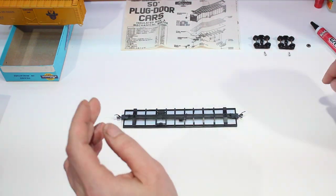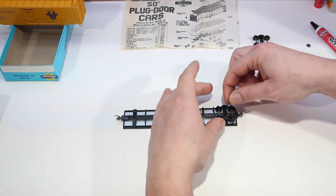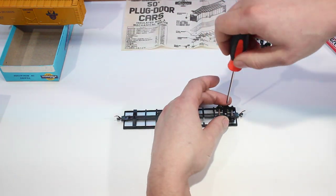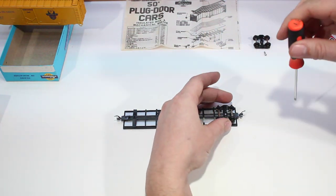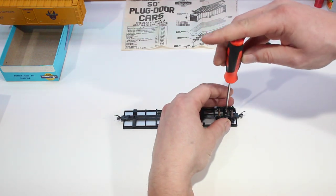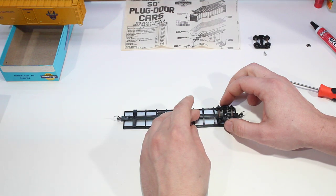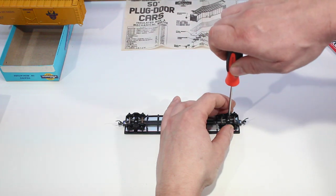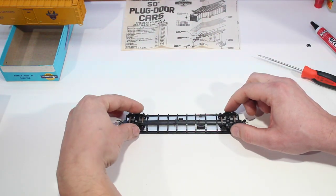Then we can go ahead and put our wheel sets on. When you got it screwed down, you want to make sure that there is still enough movement for the truck. You don't want to screw it down too tight or strip the hole. Make sure it's free moving and then do the other side.